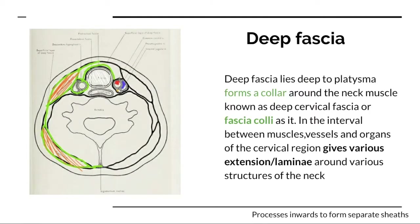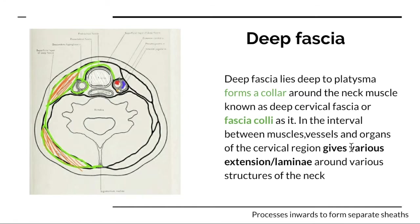The deep fascia lies deep to the platysma and forms a collar around the neck, completely enclosing it. It is also called fascia coli because it forms a collar. In the interval between the muscles, vessels, and organs of the cervical region, it gives various extensions or laminae around the various structures of the neck.